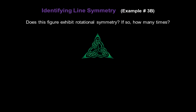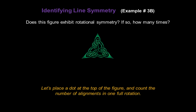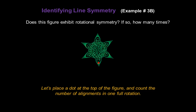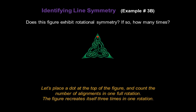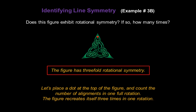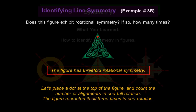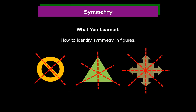Does this figure exhibit rotational symmetry? And if so, how many times? Let's place a dot at the top of the figure and count the number of alignments in one full rotation. One time, two times, three times. So this figure recreates itself three times in one rotation — that means the figure has three-fold rotational symmetry. Congratulations! You've learned how to identify symmetry in figures.